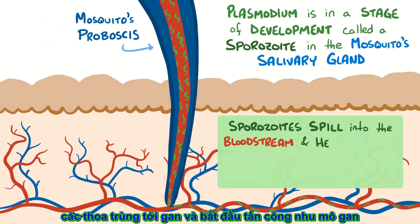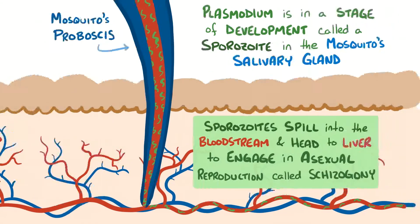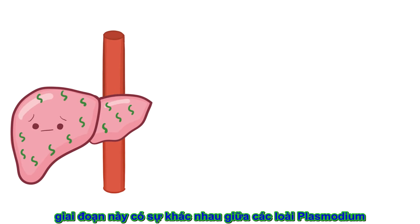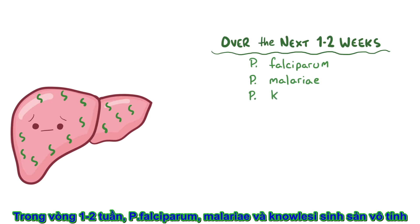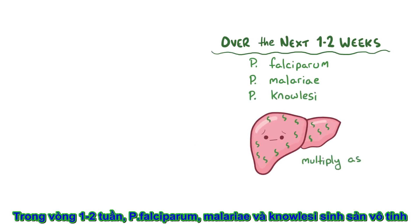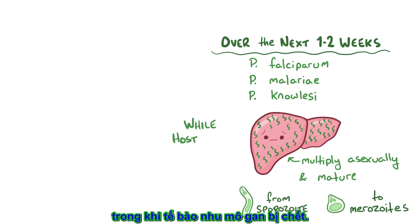Within minutes, the sporozoites reach the liver and mount an attack on the hepatic parenchymal cells, where they start asexual reproduction, also known as schizogony. Over the next 1-2 weeks, Plasmodium falciparum, Plasmodium malariae, and Plasmodium knowlesi sporozoites multiply asexually and mature into Plasmodium merozoites, while host hepatic parenchymal cells die.